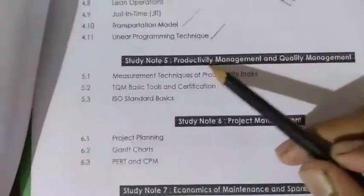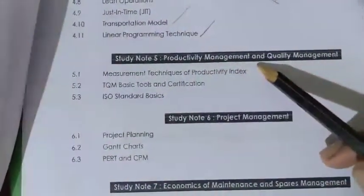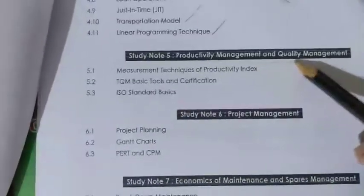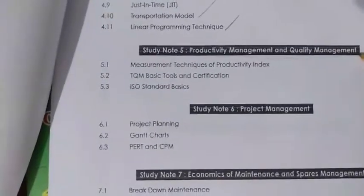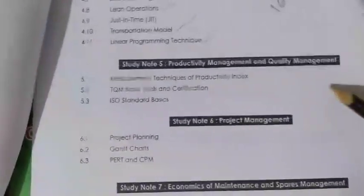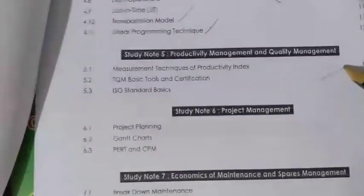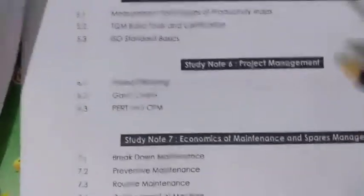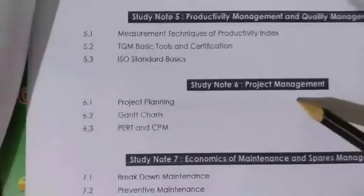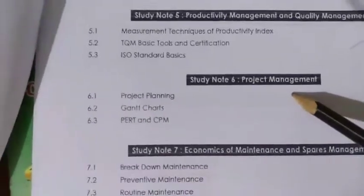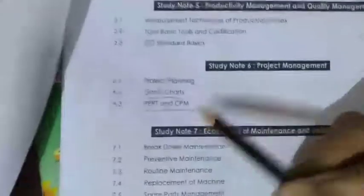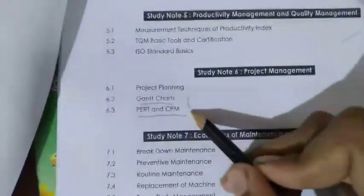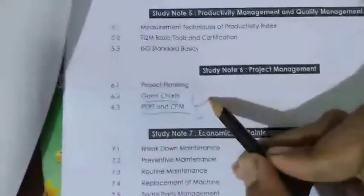The fifth chapter is Productivity Management and Quality Management, which is an important area with numeric questions. The sixth chapter is Project Management — the main topics here are the Gantt chart, PERT, and CPM. These are two important question areas in the exam.